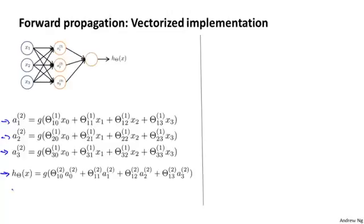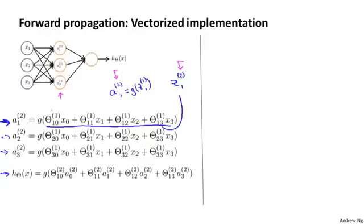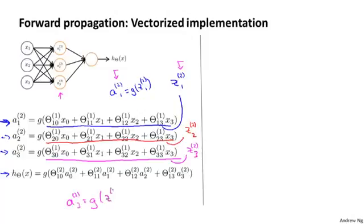Now, I'm going to define a few extra terms. So this term that I'm underlining here, I'm going to define that to be z superscript 2 subscript 1, so that we have that a21, which is this term, is equal to g of z21. And by the way, these superscript 2, what that means is that the z2 and this a2 as well, the superscript 2 in parentheses means that these are values associated with layer 2, that is, with a hidden layer in the neural network. Now, this term here, I'm going to similarly define as z22. And finally, this last term here that I'm underlining, let me define that as z23. So that similarly, we have a23 equals g of z23. So these z values are just a linear combination, a weighted linear combination of the input values x0, x1, x2, x3 that go into a particular neuron.